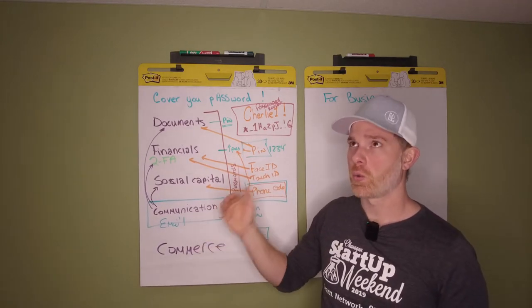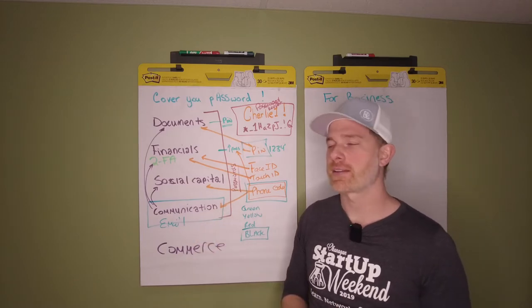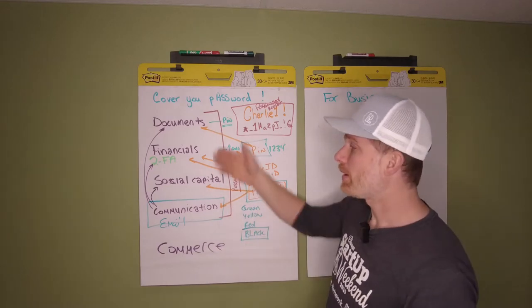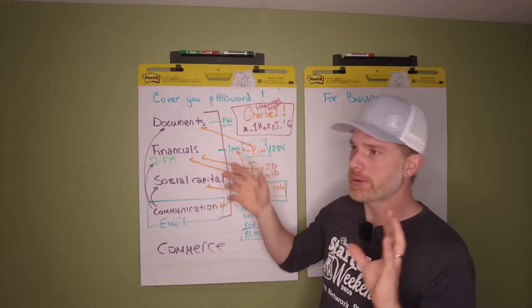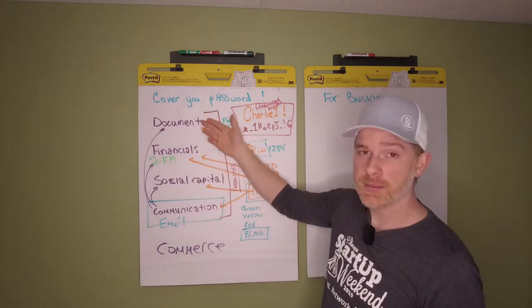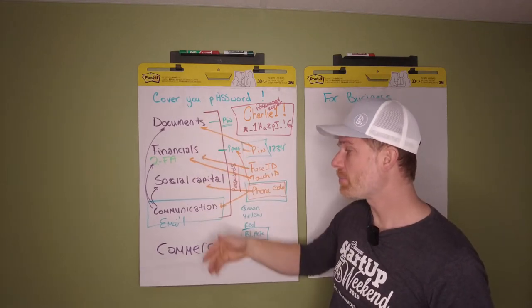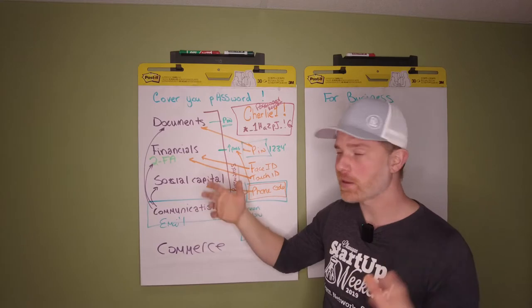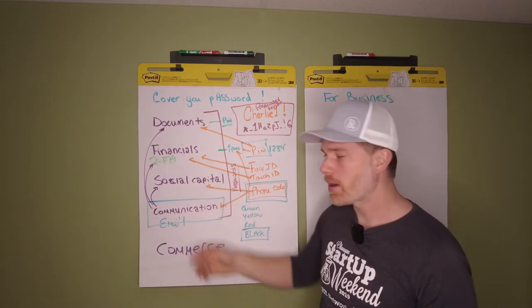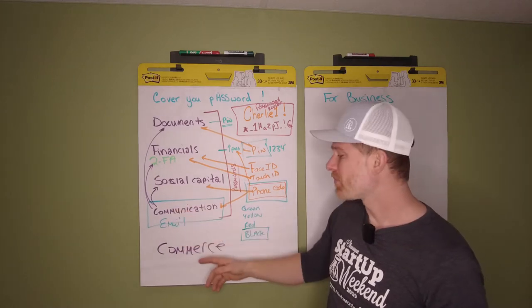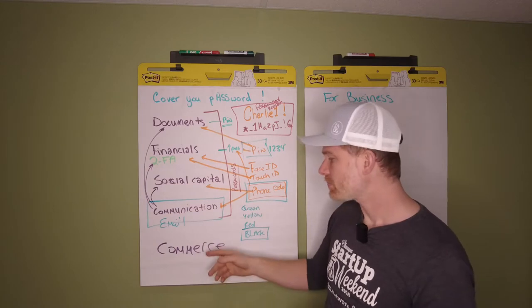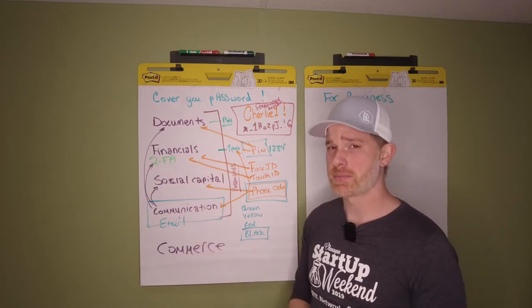Doing a quick recap, the categories of your important information, loosely speaking, is documents, financials, social capital which is like your social media, communications which is largely your email, maybe even Teams, and then commerce if you're processing people's payments or their private personal information.